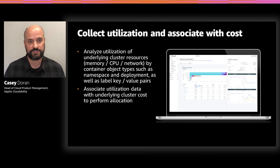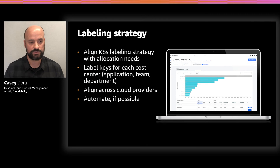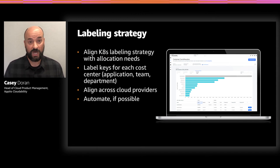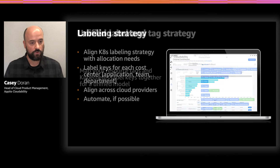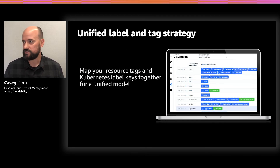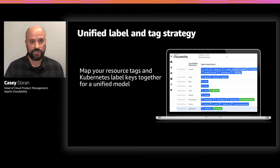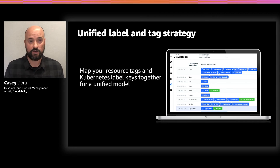The next — and maybe more important — thing is labeling. Through Kubernetes labels you can label workloads and associate them with things important to you: application, team, department, etc. If possible, automate this as you roll out new things to ensure alignment with your tagging strategy. You also want to align your Kubernetes label strategy with your overall resource tagging strategy — same keys like team, app, business unit — so when analyzing the data later you can associate them with cost data and perform allocation across those constructs.